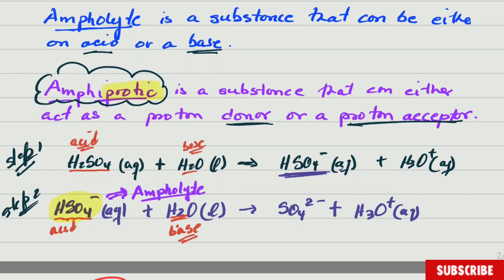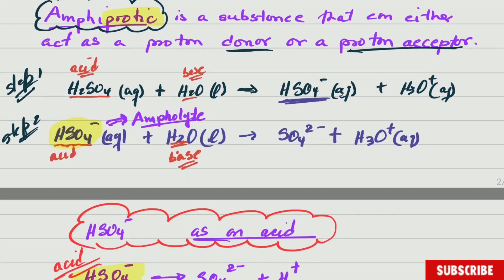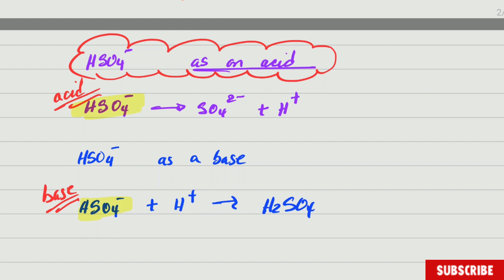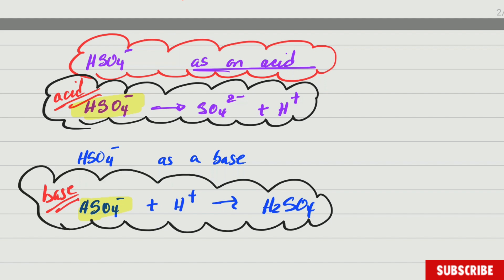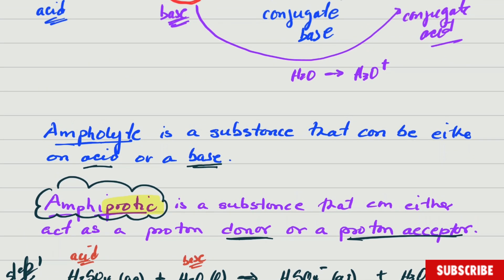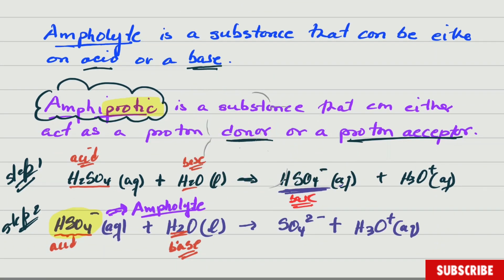Be careful — when there is a question asking for an ampholyte, people quickly say water, but it depends on the equation. In this chemical equation, you can see that water is a base in step one and an acid in step two, but the ampholyte specific to the sulfuric acid dissociation reaction is HSO₄⁻. The equations showing HSO₄⁻ as an acid and as a base are important because a question could ask you to represent it as either. That's the end for this video — next time we'll talk about concentrated acid versus dilute acid. Subscribe to the channel, I'll see you next time, Mr. G here.